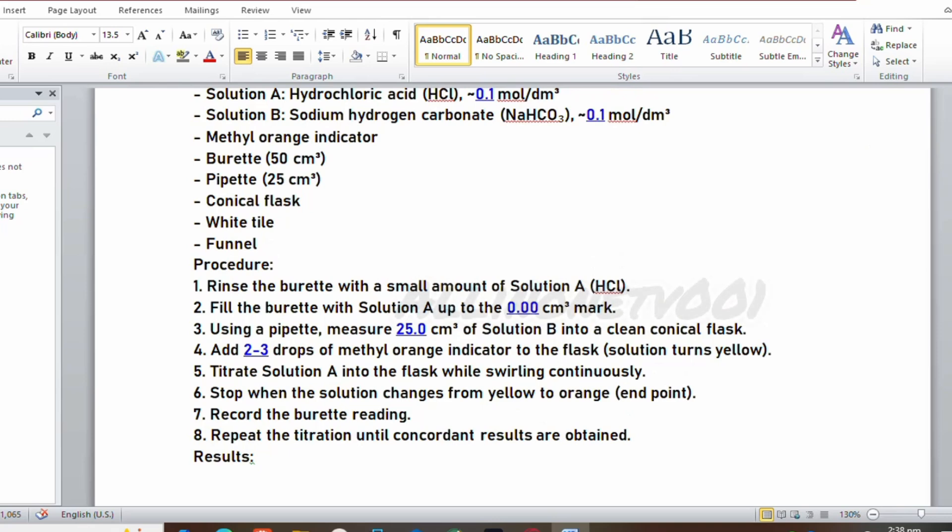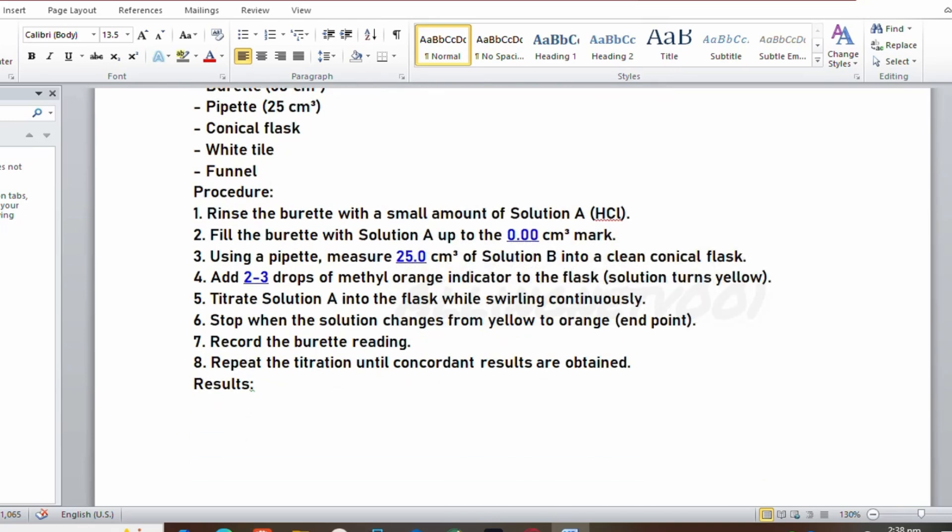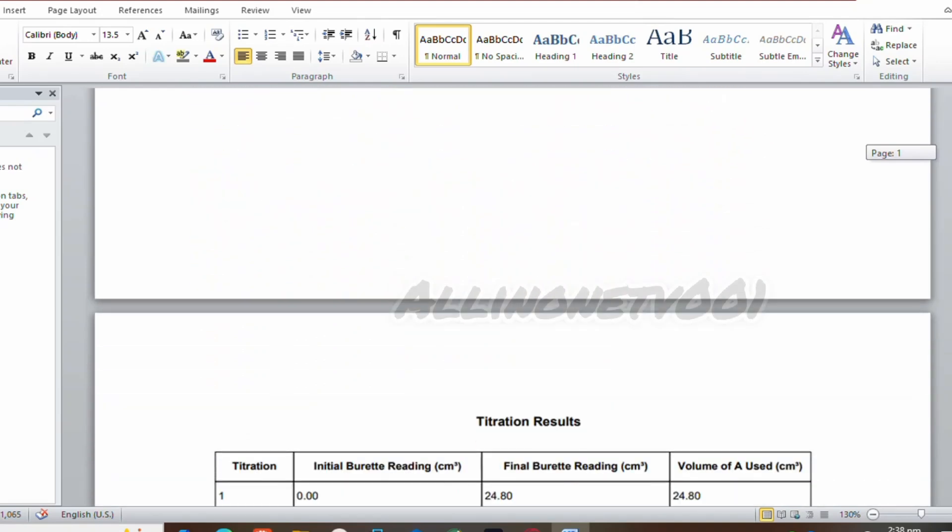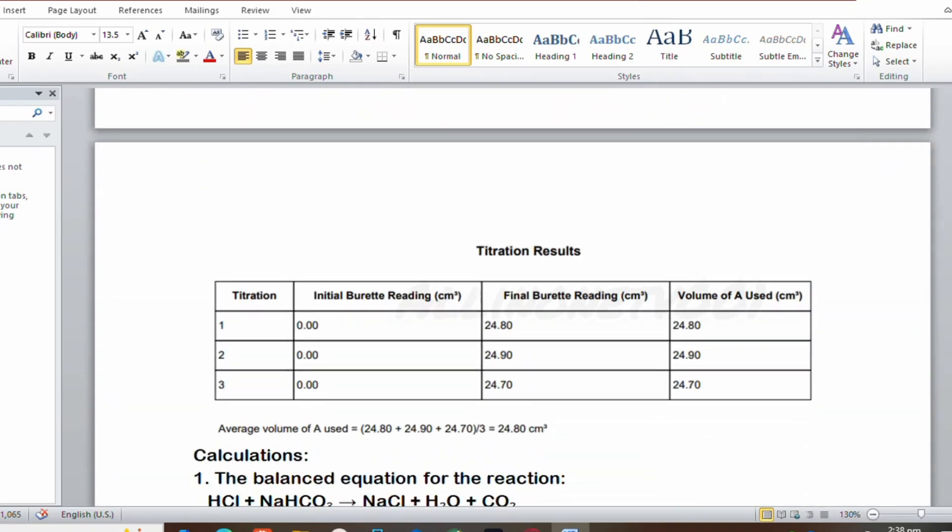After this, here are the results we got in the lab. We made our titration readings two times, though you're able to do it three times. You can see the initial and final readings. The average volume of A used is the total sum of the volume of A divided by the number of trials.